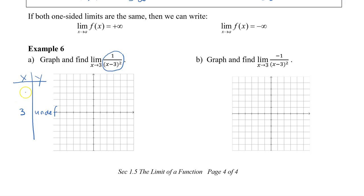From here, I'm going to pick a couple of points on either side: x values of 1 and 2, and also 4 and 5. Plugging in 1: 1 minus 3 is negative 2, negative 2 squared is 4, so the y value is 1/4. Plugging in 2: 2 minus 3 is negative 1, negative 1 squared is 1, so 1 divided by 1 is 1. Plugging in 4: 4 minus 3 is 1, 1 squared is 1, so y is 1. And for 5: 5 minus 3 is 2, 2 squared is 4, so y is 1/4.